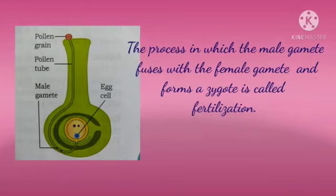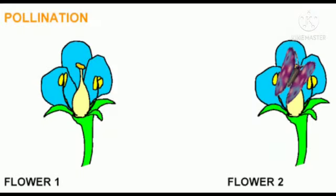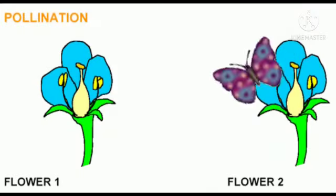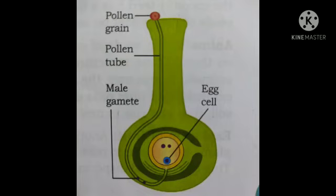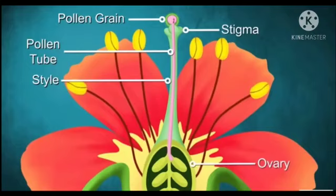Remember students, successful pollination is followed by fertilization. After pollination, once the pollen grains land on the stigma of a flower, each pollen grain starts developing a thin tube called a pollen tube.